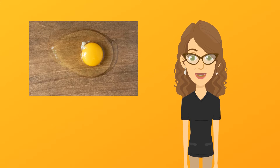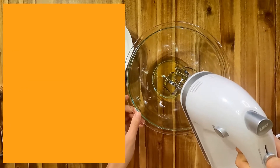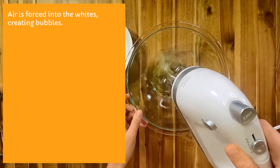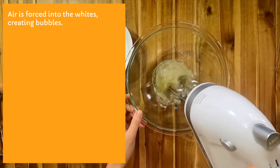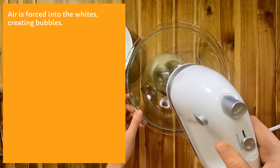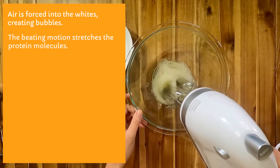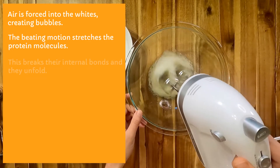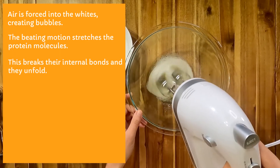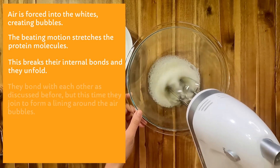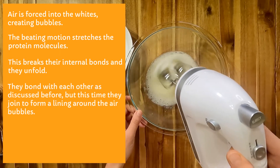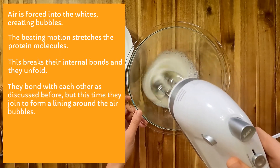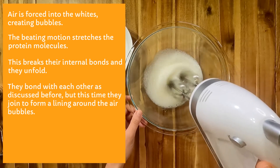Here's how it works. When you beat egg whites, a couple of things happen. First, you force air into the whites, forming bubbles. Second, the beating motion stretches the protein molecules — this breaks their internal bonds and causes them to unfold. They then bond with each other, but this time they join to form a lining around each air bubble.